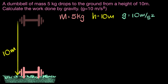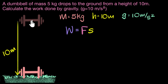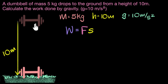From this, how do we calculate work done? We have seen from previous videos that work done by a force on any object equals the force multiplied by the displacement of that object. In our example, the object is the dumbbell, and the force acting on the dumbbell which we are asked to calculate is the force of gravity. So we multiply the force of gravity on this dumbbell with its displacement to get the work done.